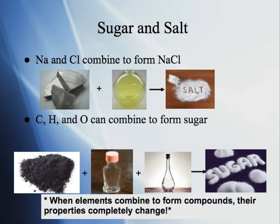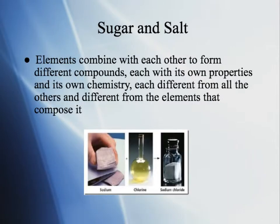Sugar is also what our body uses to make energy. We can see that when we have the elements beforehand, they have totally different properties than the compounds they form. When elements combine to form compounds, their properties completely change — which is why we have such a variety of matter all around us. All 114 elements can combine with each other in different ways to form different compounds, each with its own properties and chemistry, all different from each other and from the elements that compose them.